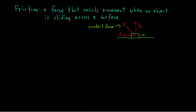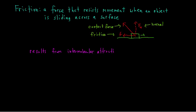You can think of friction and the normal force as really two parts of the same force — the contact force that the surface exerts on the object when it's sliding across it. What this contact force is — the normal force and the friction force — they are results of intermolecular attractions and electrostatic repulsions on a microscopic level.